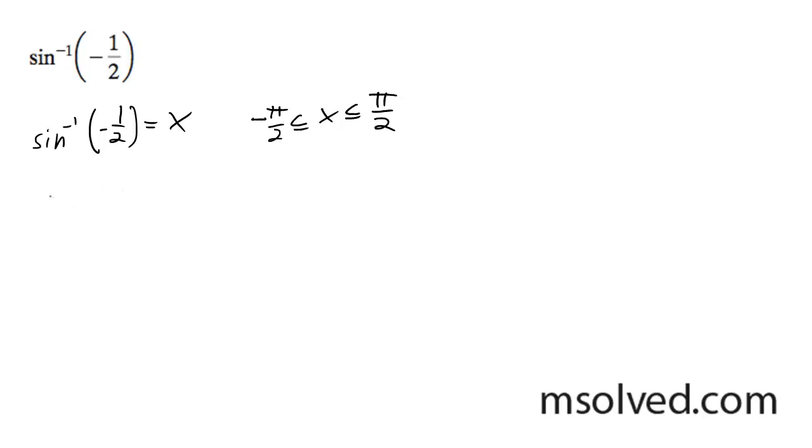It's going to be sine of x is equal to negative one-half. Where on a graph, my limits here, this is y over r, so my y needs to be negative 1, and my r needs to be 2.